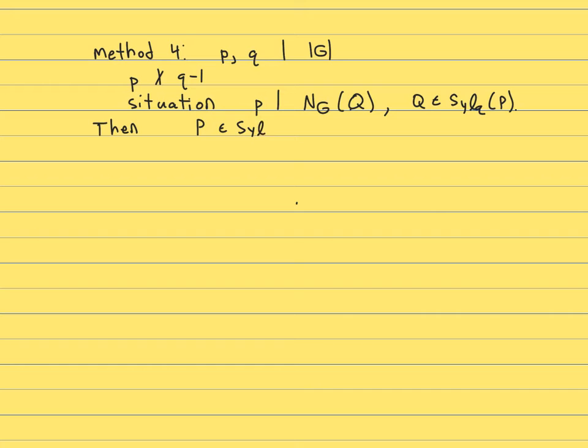So then what is this method I just used? Well, what you're doing is that you've got two primes, p and q, dividing the order of g. With the feature that p divides, does not divide q minus 1. Here I'm following the book now, so I'm switching the rules of p and q from what I was just doing. And you're in the situation where p divides the order of the normalizer of a Sylow q subgroup.